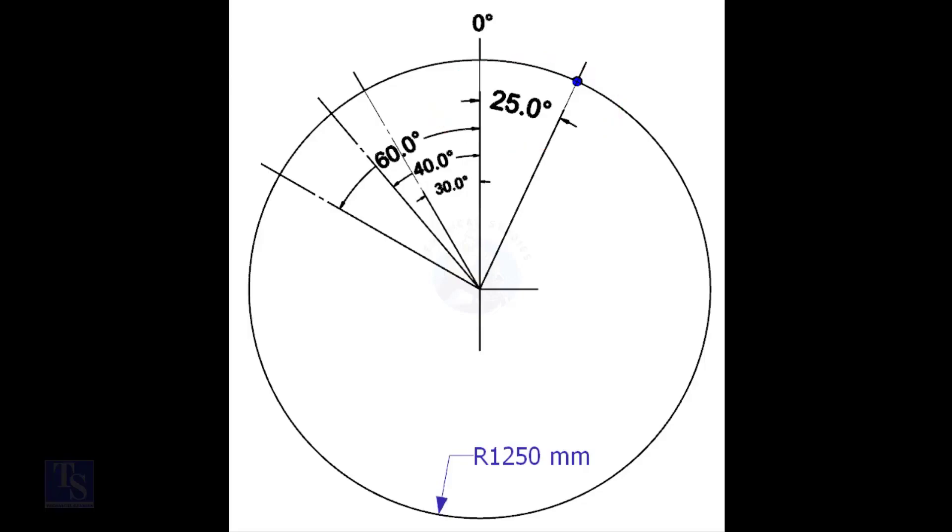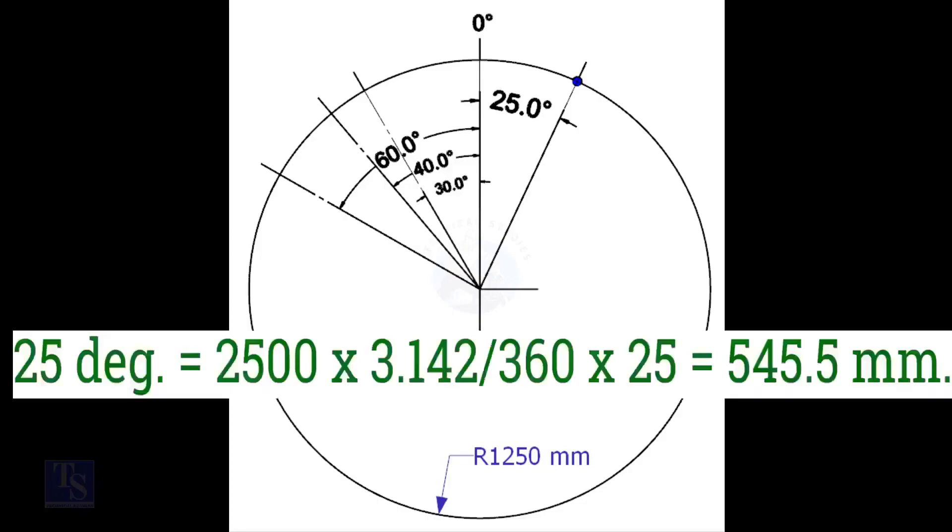We have the included degree and the diameter of the tank. Let us calculate the arc length. Arc length for 25 degree is equal to outer diameter into 3.142 divided by 360 into 25 is equal to 545.5 millimeters.